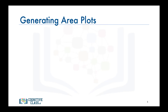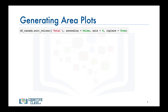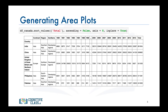Now that we know how our data is stored in the data frame DF_Canada, let's try to generate area plots for the countries with the highest number of immigration to Canada. We can find these countries by sorting our data frame in descending order of cumulative total immigration from 1980 to 2013. We use the sort_values function to sort our data frame in descending order. It turns out that India, followed by China, the UK, Philippines, and Pakistan are the top five countries with the highest number of immigration to Canada.